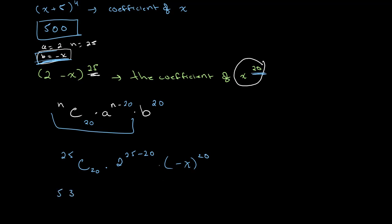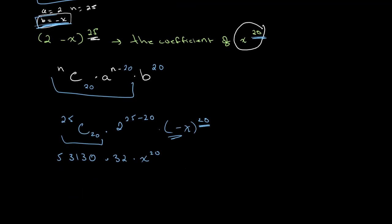Putting this into our calculator: 25C20 gives us 53,130, and 2 to the power of 5 is 32. The negative sign disappears because the power of 20 is even. Multiplying 53,130 times 32 gives us 1,700,160. So the coefficient of x to the power of 20 is 1,700,160.